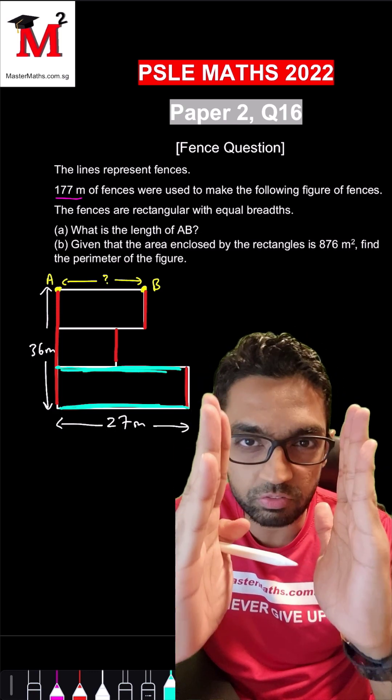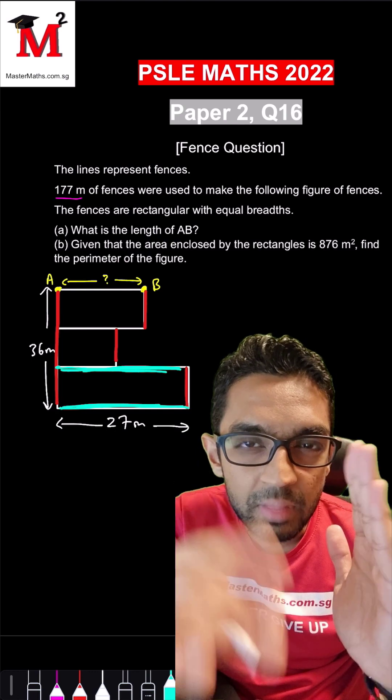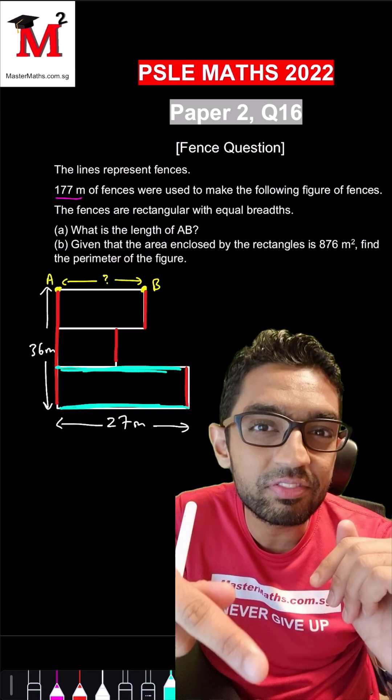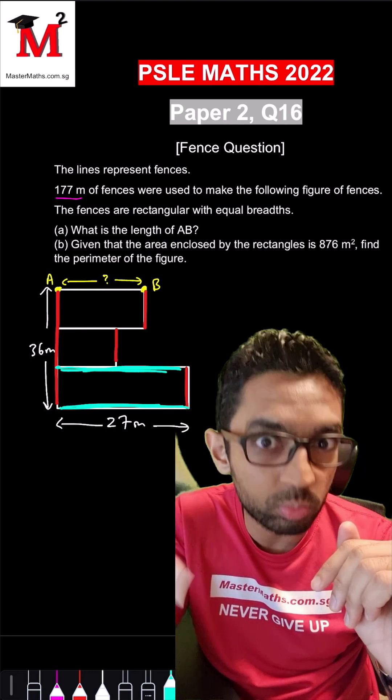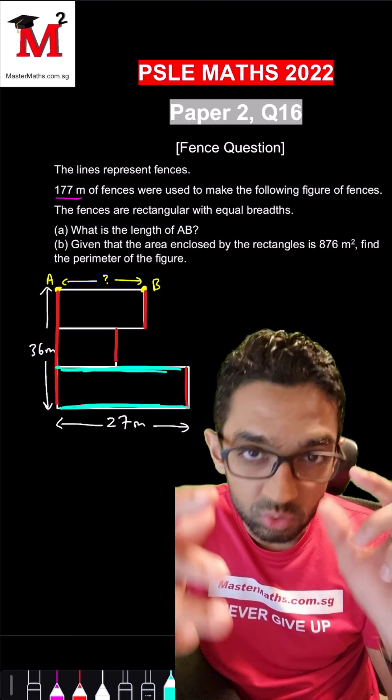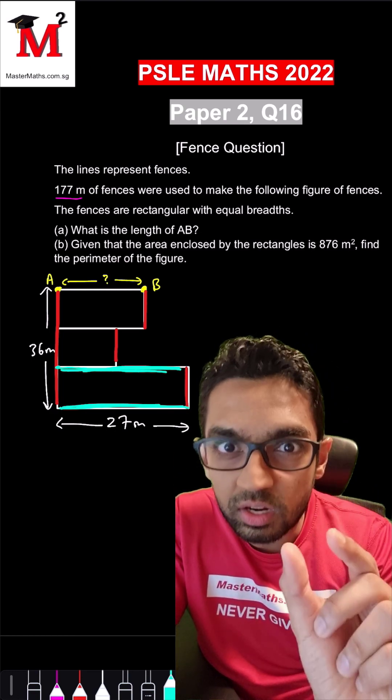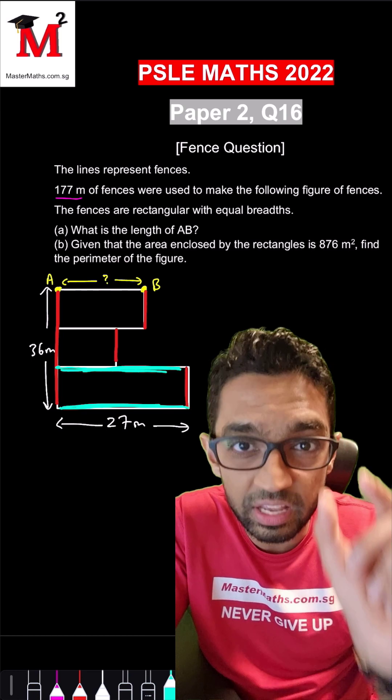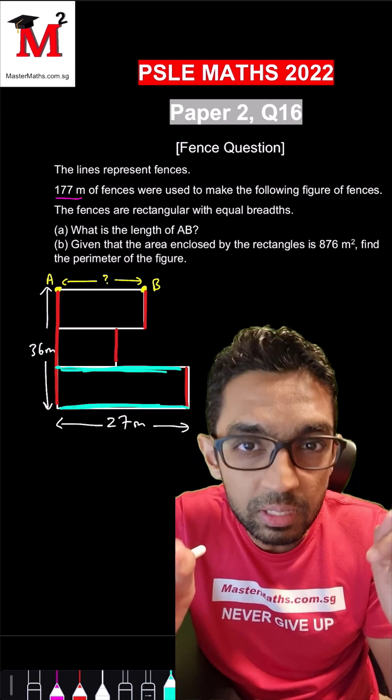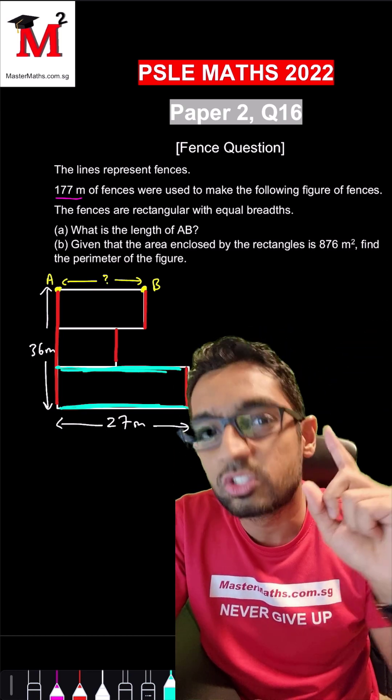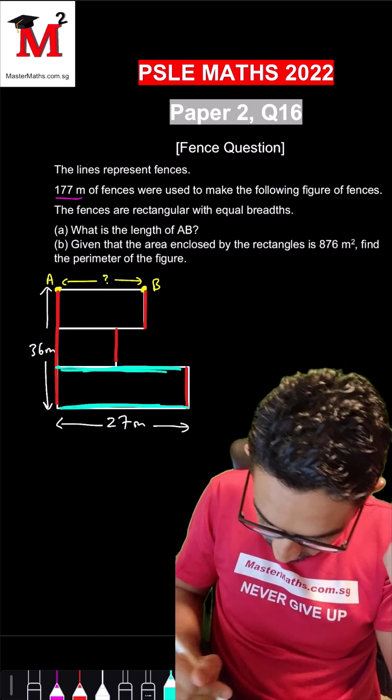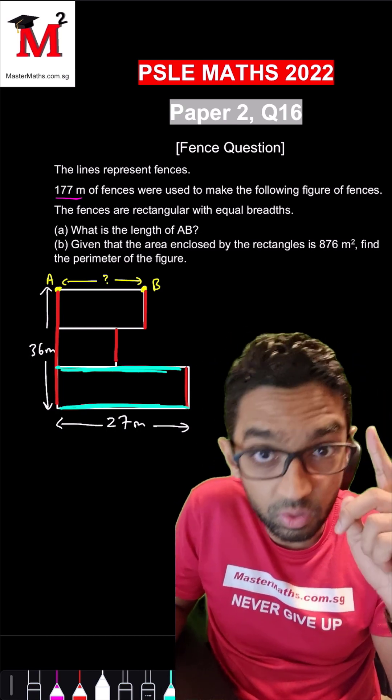So if you take the red lines, 36 times 2, that will give you all the red lines, plus 27 times 2, the two blue lines. You take that total and you work with 177 meters. You take 177 meters, subtract away that total, you will get twice of AB. So that is the strategy for this particular question.